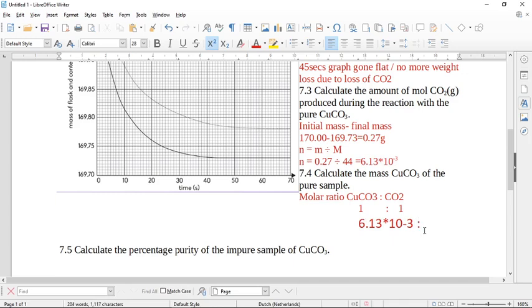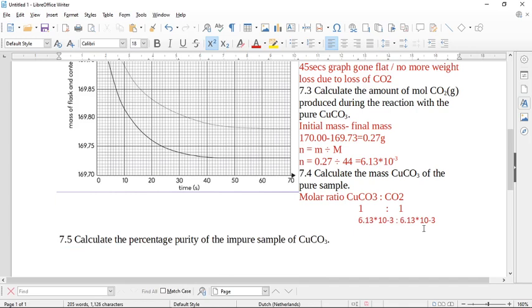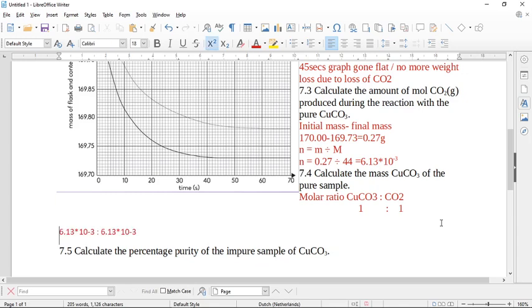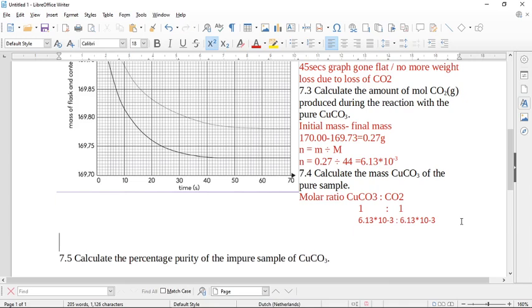So then the moles of these will be exactly the same. Now we need to check what the mass is. Because it asks you in the question, what is the mass? Remember, we always work from moles to mass and back again. So n equals m over M. So small m will be equal to n times M. So we're going to use this formula. And we're going to multiply it by the relative molecular mass of copper, which is 123.5.